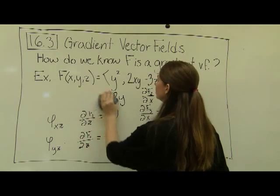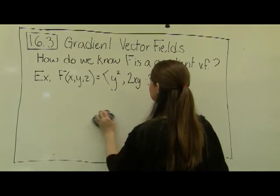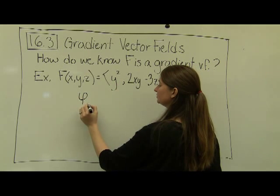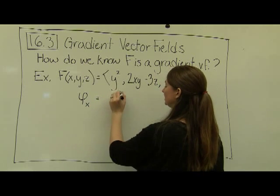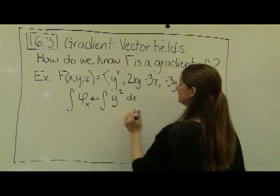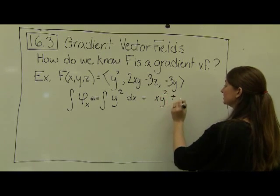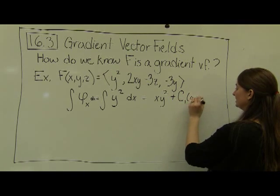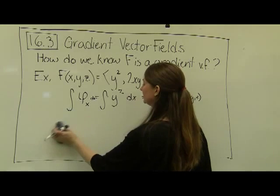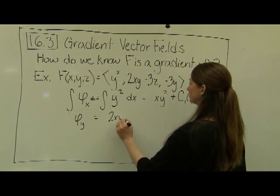For review, let's find the potential function. The partial of phi with respect to x equals y², so integrating with respect to x gives phi = xy² + g(y, z). Next, the partial of phi with respect to y must equal 2xy − 3z, so integrating 2xy − 3z with respect to y gives xy² − 3zy + h(x, z).